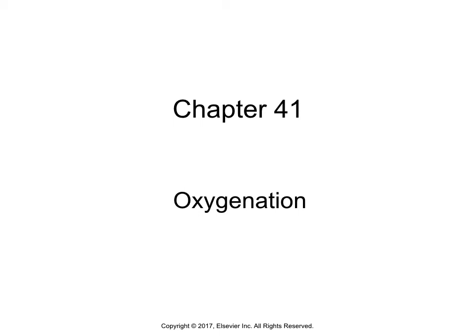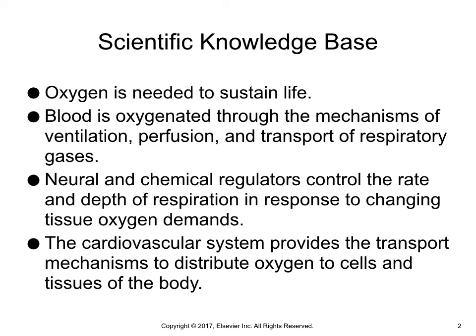Chapter 41, Oxygenation. Scientific knowledge base: oxygen is needed to sustain life. Blood is oxygenated through the mechanisms of ventilation, perfusion, and transport of respiratory gases. Neural and chemical regulators control the rate and depth of respiration and respond to changing tissue oxygen demands. The cardiovascular system provides the transport mechanisms to distribute oxygen to cells and tissues of the body.